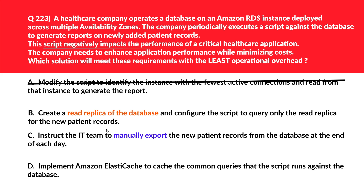Option B says create a read replica of the database and configure the script to query only the read replica for the new patient records. This solution offloads read operations to the read replica, reducing the load on the primary database and improving application performance with minimal operational overhead — exactly what the question requires. Let's park this. Option C says instruct the IT team to manually export the new patient records at the end of each day. Manual processes are prone to human errors and increase operational overhead, so we'll reject option C.